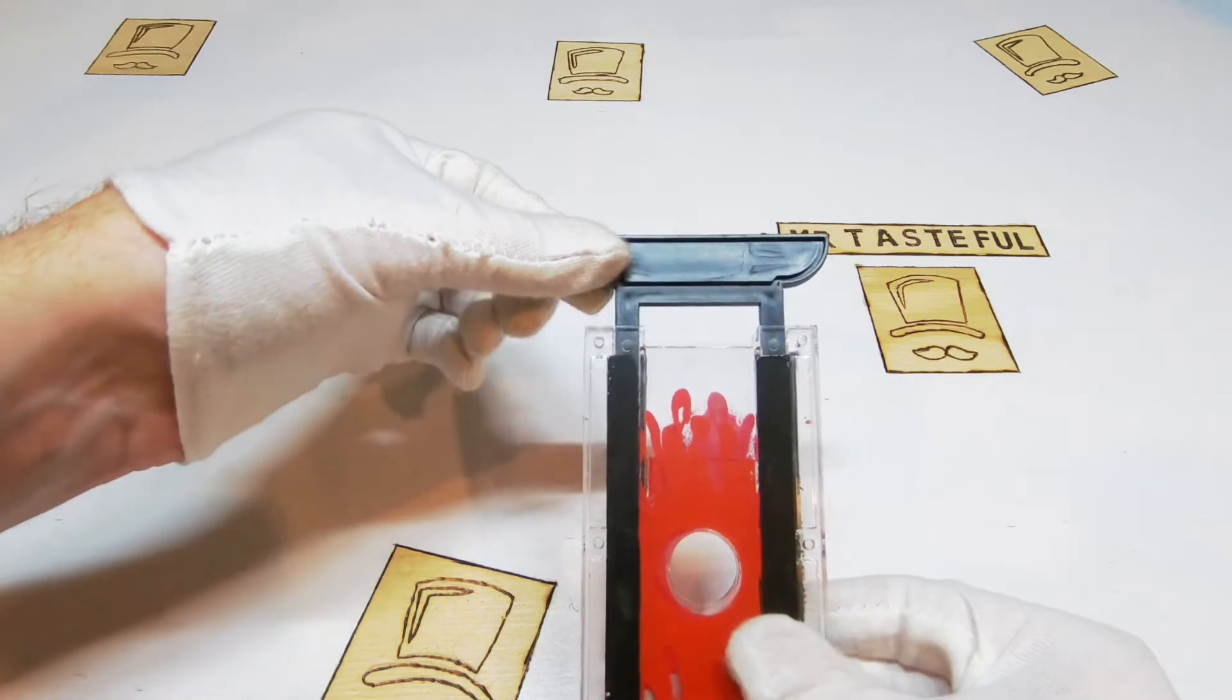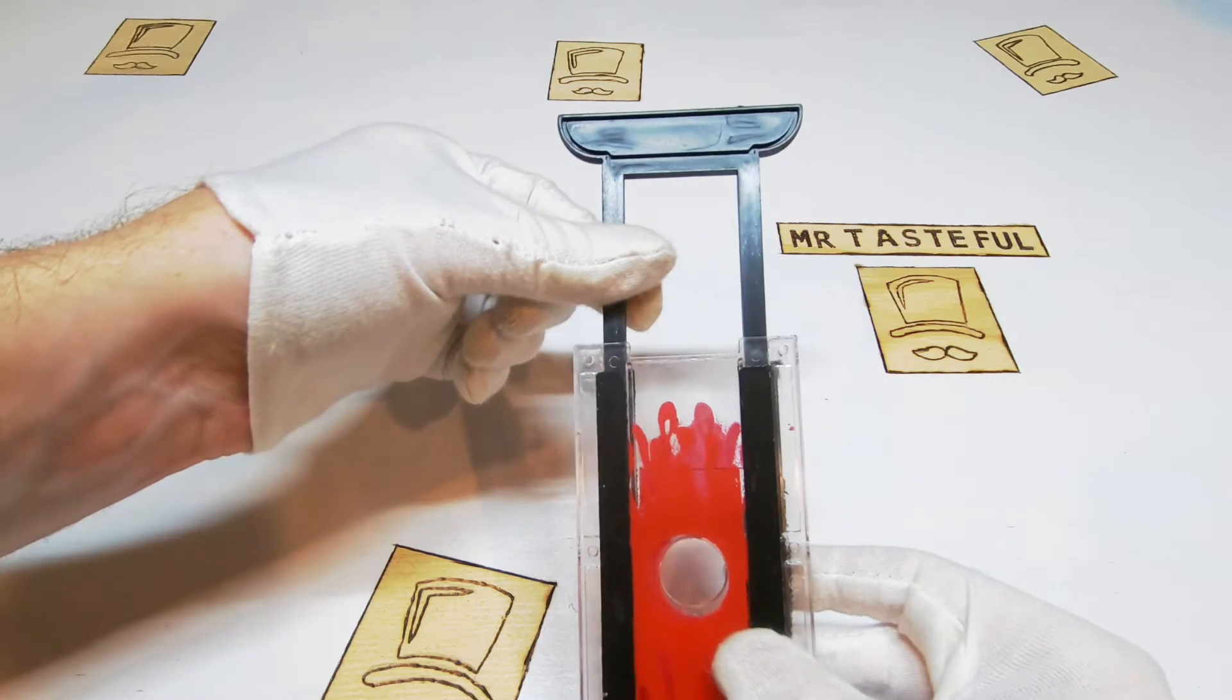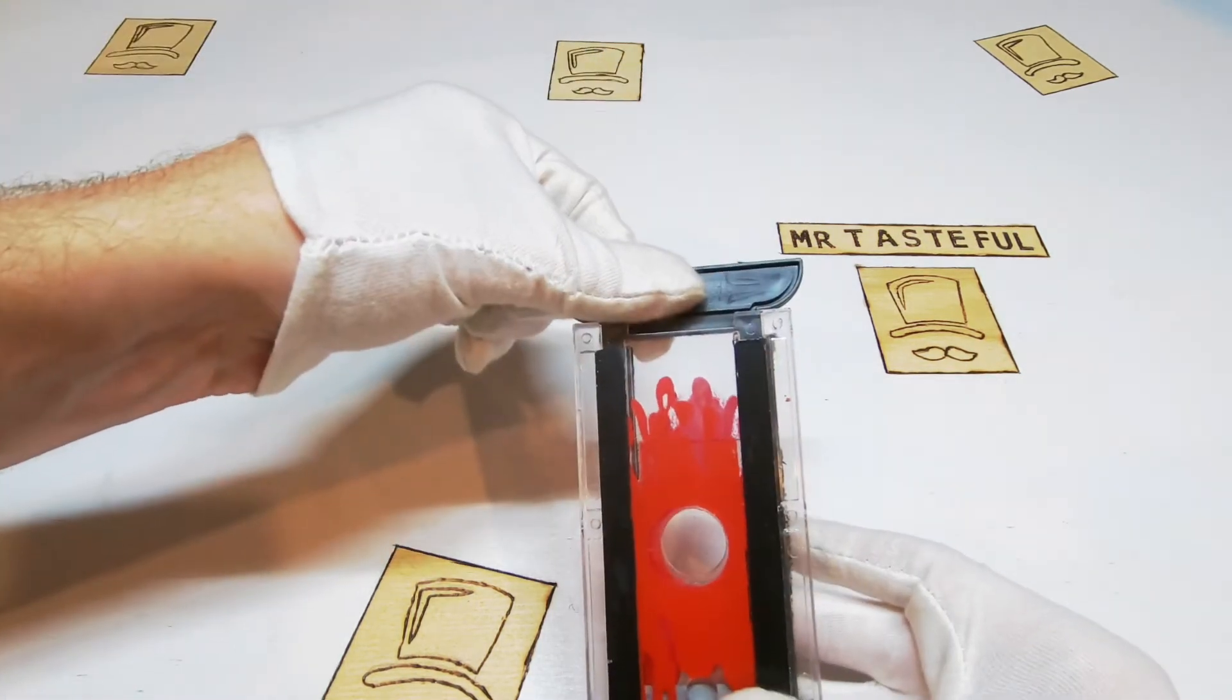We pull up the plastic slider. We can clearly see the blade pass through the hole. We then push the slider back down. Chop chop!